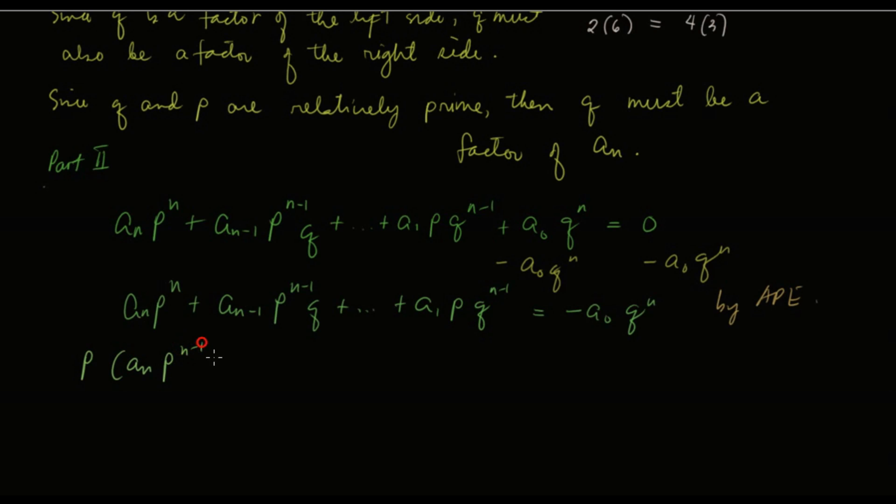Plus a sub n minus 1 p raised to n minus 2 q. Because when you factor out one p, here you also factor out one p, so the exponent is reduced by one. Plus a sub 1 q raised to n minus 1, is equal to negative a sub 0 q raised to n.